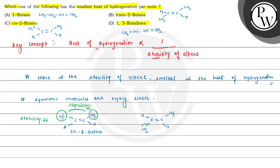And a more stable alkene will have the smallest heat of hydrogenation. Trans-2-butene, given in option B, is the most stable, hence option B is the correct choice for this question. Hope you understood it well. All the best and thank you.